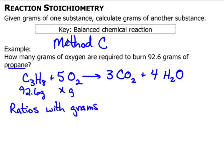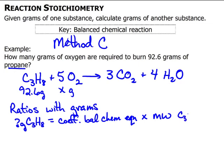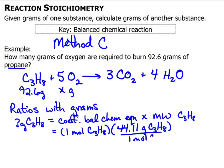Previously, in method B, we did ratios with moles using the balanced chemical equation. Now we'll ratio with grams, and in order to do that, we need the molecular weight. So I need to know how many grams for C3H8. This is going to be the coefficient in the balanced chemical equation times the molecular weight of C3H8. The coefficient is one mole C3H8, and the molecular weight is 44.11 grams C3H8 per mole C3H8.